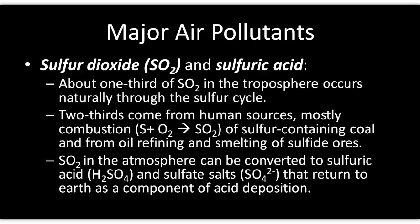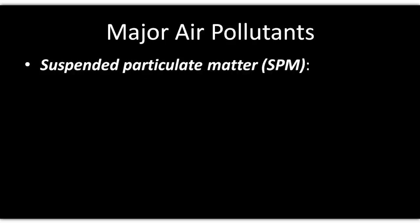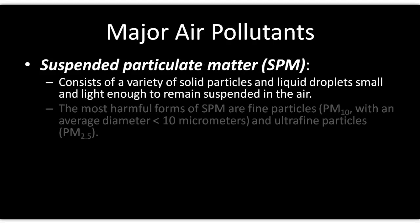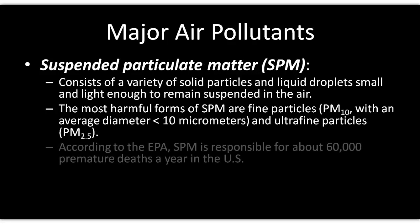Sulfur oxides mainly come from burning coal for electricity generation. Notably, two-thirds of all sulfur in the atmosphere is estimated to come from human sources — incredibly significant. When we talk about acidification of waterways, it's largely driven by these human activities, not just natural sources.